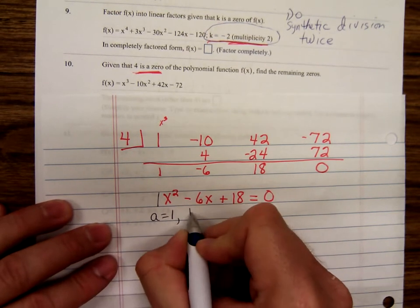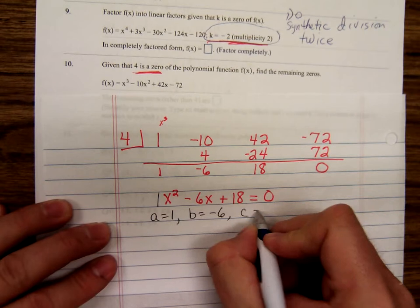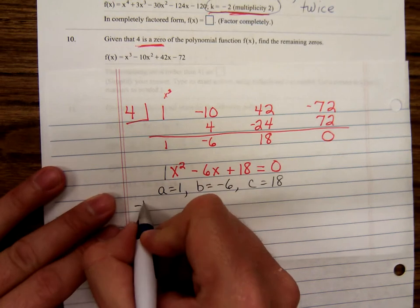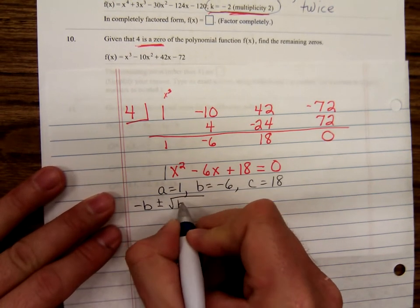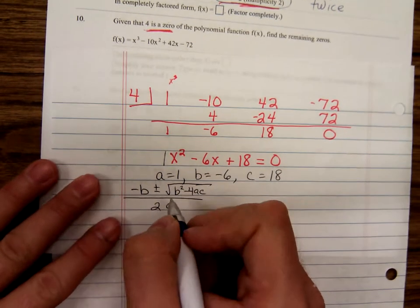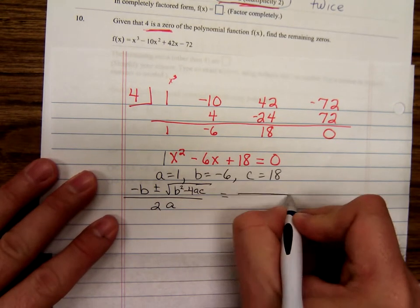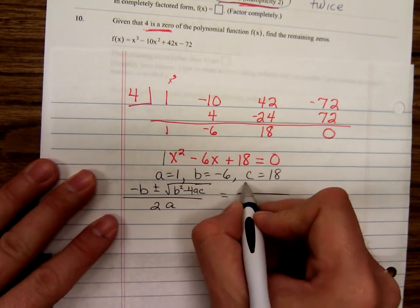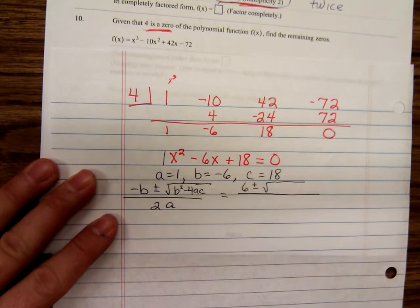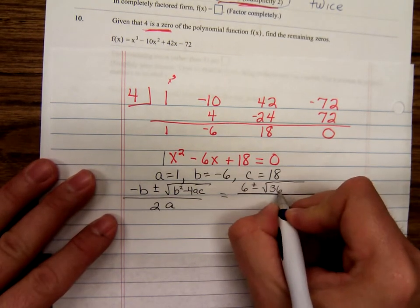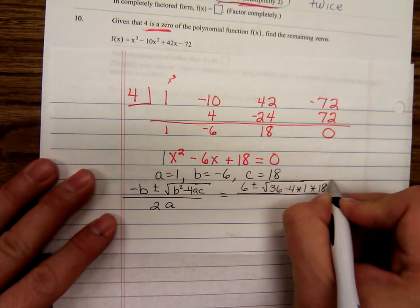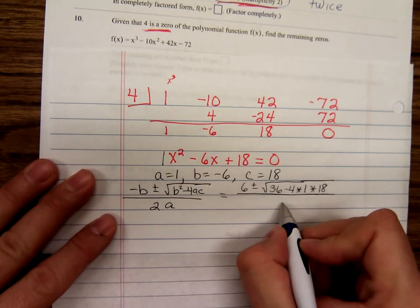A is one, B is negative six, C is eighteen. And minus B plus or minus square root of B squared minus four AC all over two A. So plugging in minus B, that would be negative negative six plus or minus square root of B squared, negative six times negative six, thirty-six, minus four times A times C, all over two times A, two times one.